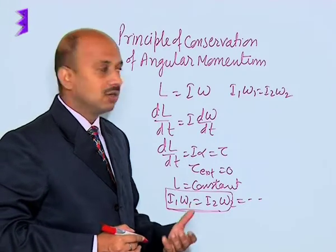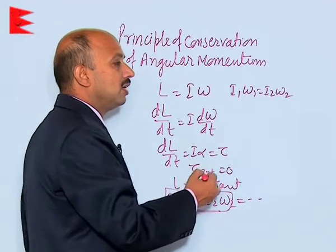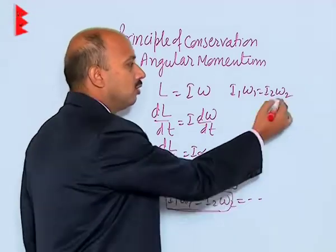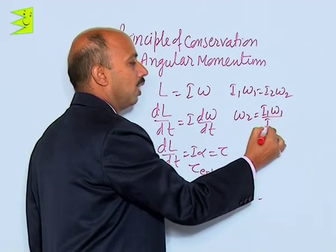If she folds her hands, what happens? Moment of inertia reduces. If the moment of inertia reduces because r reduces here, we can write omega 2 is equal to I1 omega 1 upon I2.